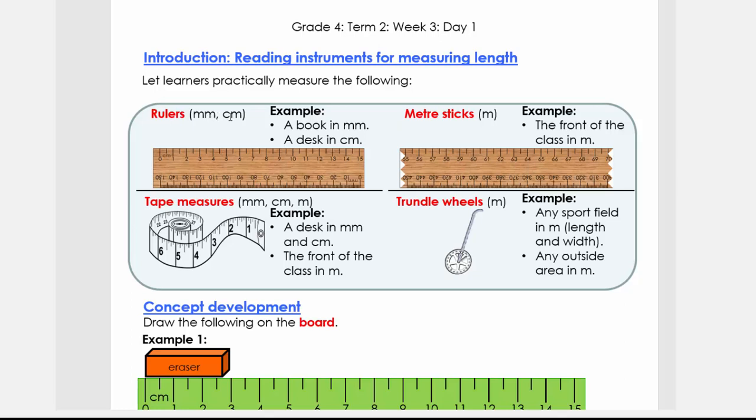So for rulers we're going to measure in millimeters and centimeters for examples like books or a desk, a table at home. Meter sticks for the front of any room. Then for tape measures we're going to measure in millimeters, centimeters and meters. It can be your desk or the front or the back of a room. And then your trundle wheels, it's always a very nice activity to do outside.